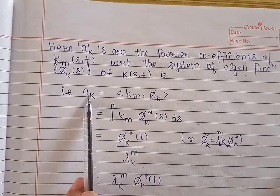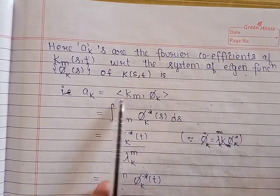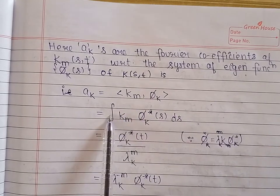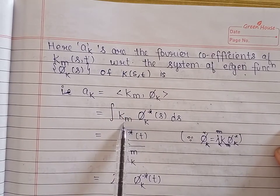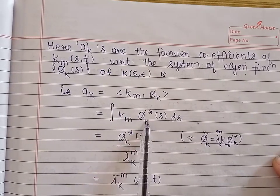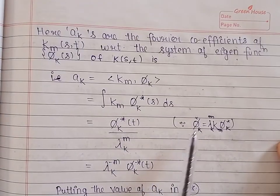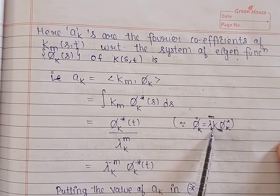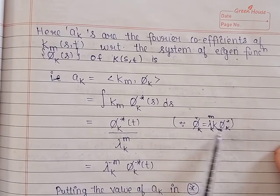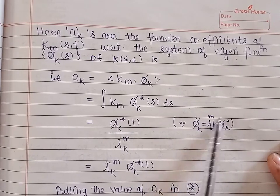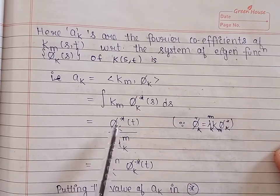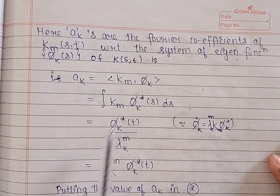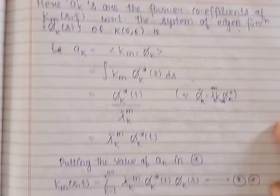The Fourier coefficients a_k are given by the inner product of K_m with phi_k. By definition of inner product, this is the integral of the product of K_m with the conjugate of phi_k. Using the property of the symmetric integral equation for the eigenfunctions phi_k conjugate and eigenvalues lambda_k raised to the power m, we find this value is given by phi_k conjugate divided by lambda_k raised to the power m.